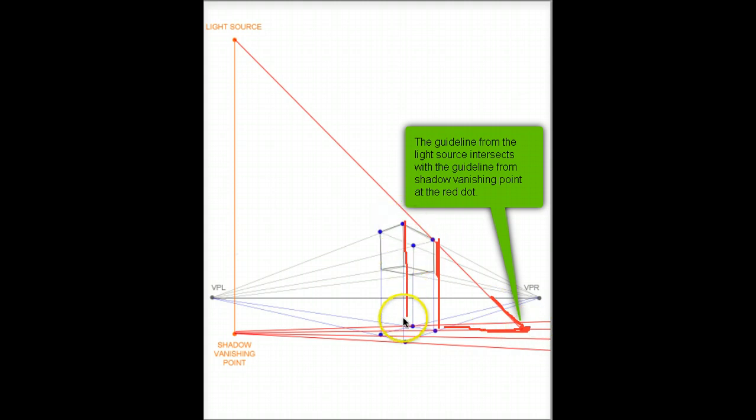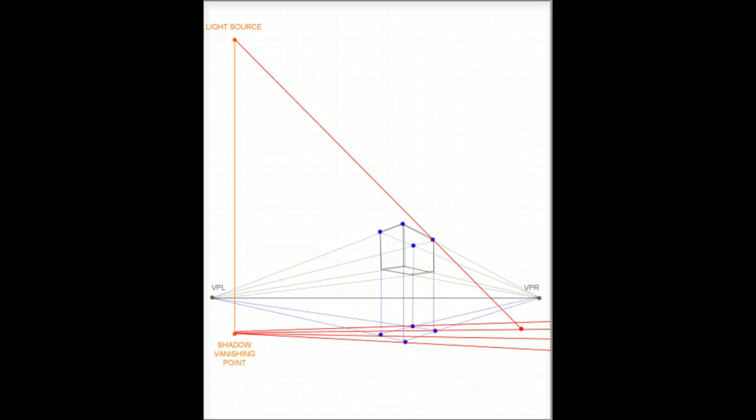Likewise, these two will go together. So lines from the shadow vanishing point will go through this line. And guides from the light source that go through this point will touch on that line. So it's important to remember that those two, the dots are above and below each other. That's where those lines will intersect. And as I draw more of them, it will become more apparent. So you can see this line, guidelines going through the upper front corner, and it's intersecting with the guideline from the shadow vanishing point that goes through the lower front corner. And this dot right here.